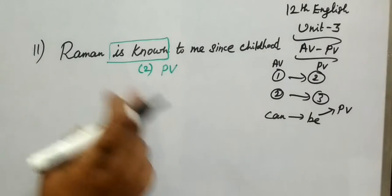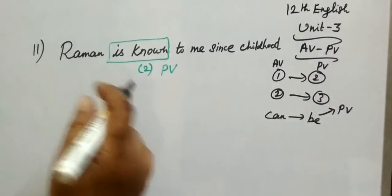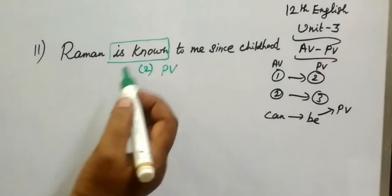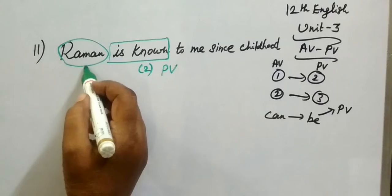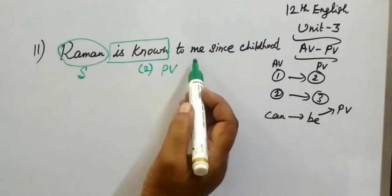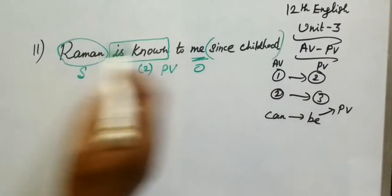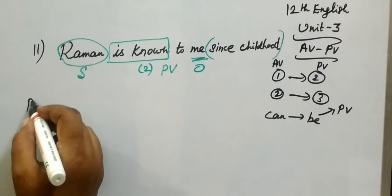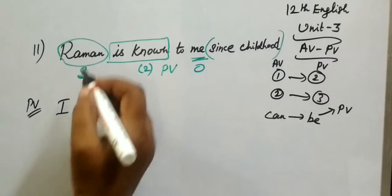Now this is active voice. 'Is known,' 'was known,' 'are known,' 'were known' — these refer to passive voice. Raman is known to me. 'Raman' is the object. 'Me' is extra information — you change 'me' to 'I' in active voice.